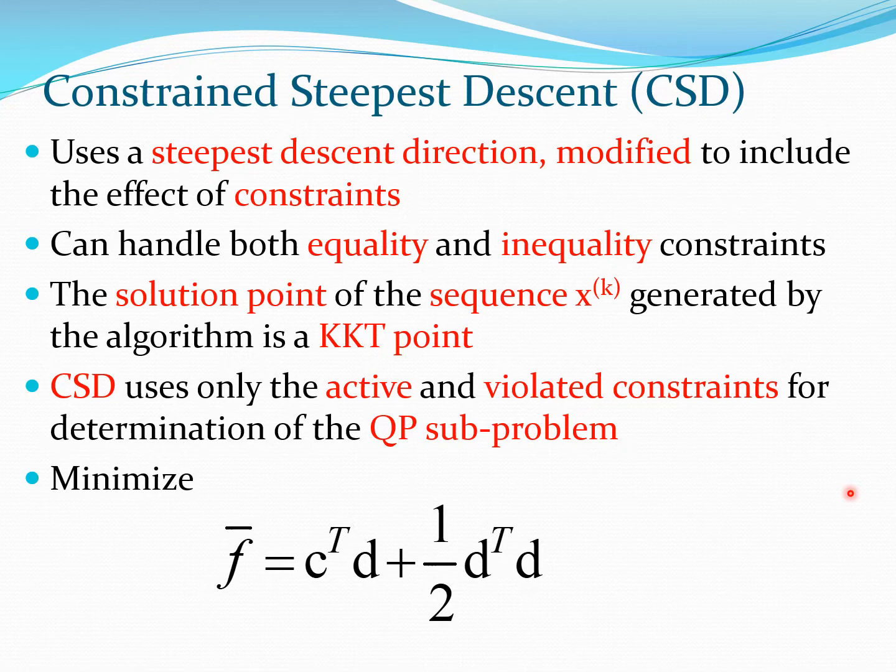This method can handle both types of constraints: the type H(x) equals 0 and the type G(x) less than or equal to 0. One of the points about this method is that the solution point of the sequence x^(k) generated by the CSD algorithm is a KKT point.